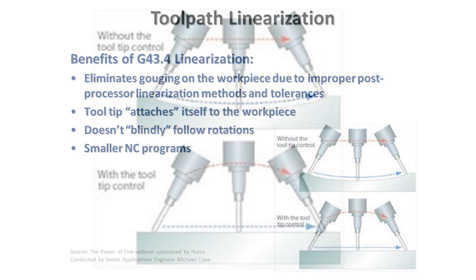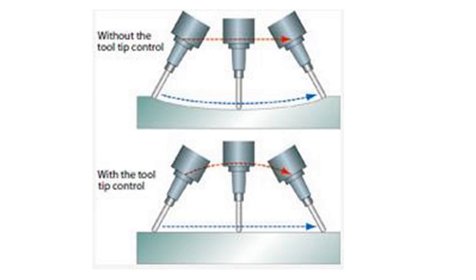If you take a look at the top of those two images, we have a B-axis position going from a positive rotation of about 30 degrees in B, being directed to move to a negative rotation of the B-axis without linearization.